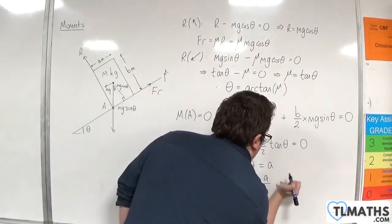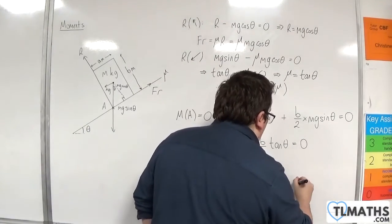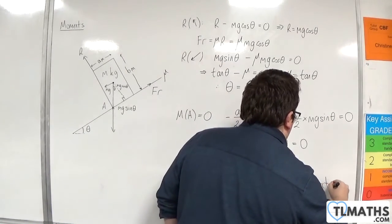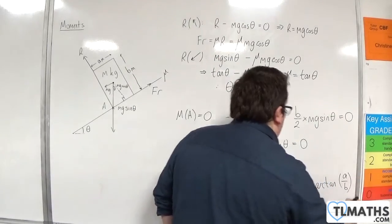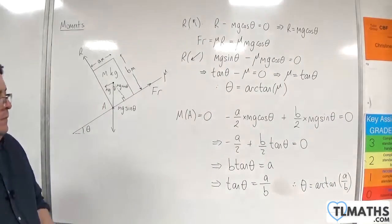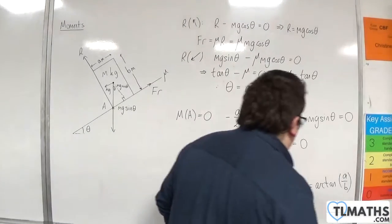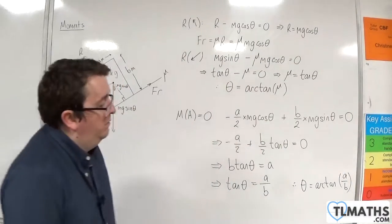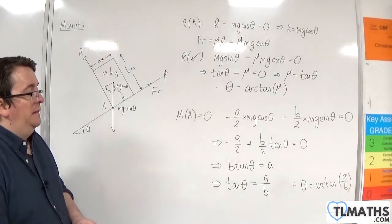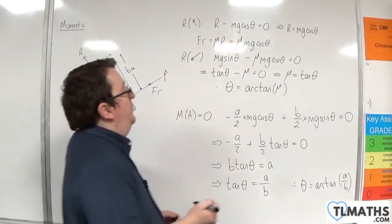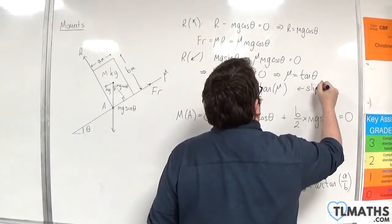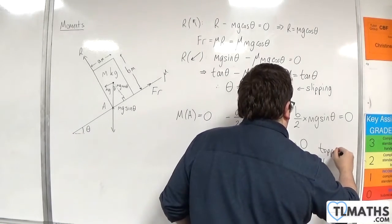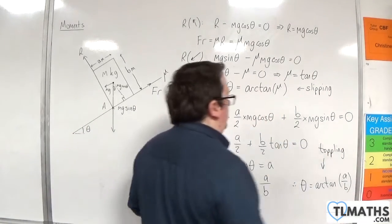So let's continue notation the same way. Therefore, theta would be equal to arctan of A over B. So if theta is greater than arctan of A over B, then the block will be on the point of toppling. So this is for slipping and that is toppling.